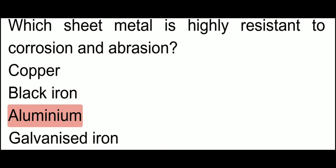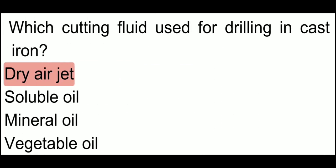Which sheet metal is highly resistant to corrosion and abrasion? Aluminum is highly resistant to corrosion and abrasion. Which cutting fluid is used for drilling in cast iron? Dry air jet is used as the cutting fluid for drilling in cast iron.